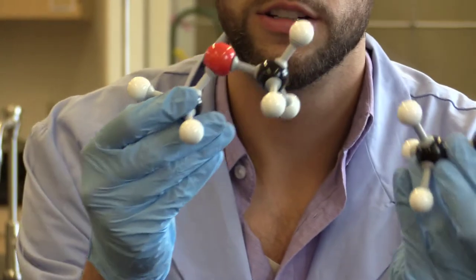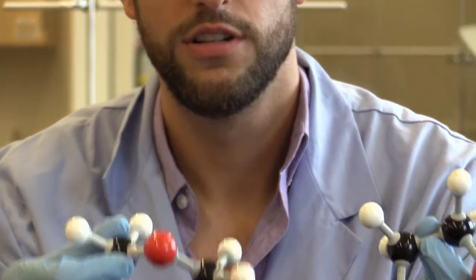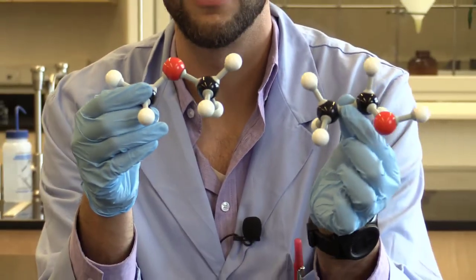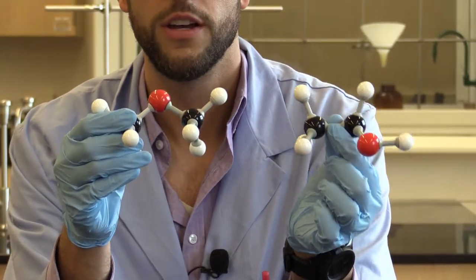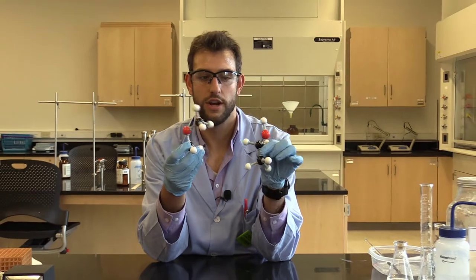So if we put the two models next to each other, you can clearly see that they have the same molecular formula, but they are structurally different. And this is the definition of a constitutional isomer. Same molecular formula, but the atoms are arranged differently.